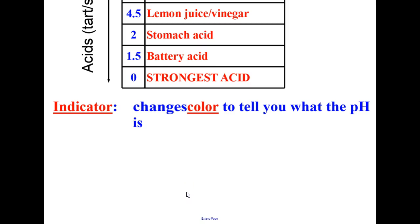In order to determine the pH of a substance, we need to use what is called an indicator. An indicator is simply a substance that changes color and matches up on a color scale to tell you what the pH is.